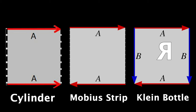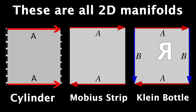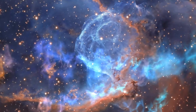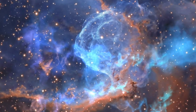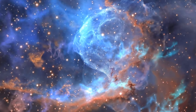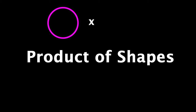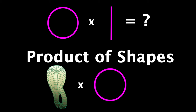If you've noticed so far, we've only talked about 2D manifolds. And where we're headed is 3D manifolds that could represent our universe — and that's where things get really weird. But first, we need to talk about the product of shapes, as in: what's a circle times a line segment? Or a Klein bottle times a circle, and so on.